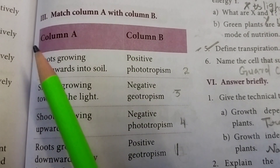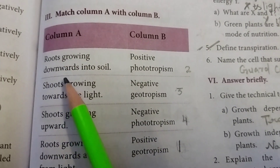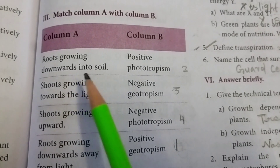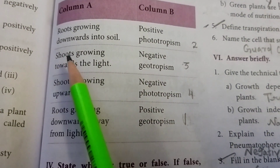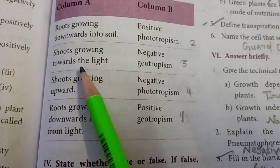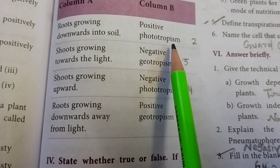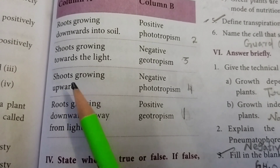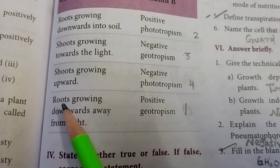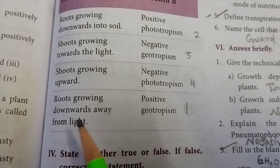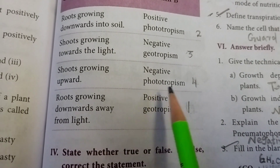Section III: match the following Column A and Column B. Roots growing downwards into soil — positive geotropism. Shoots growing towards the light — positive phototropism. Shoots growing upward — negative geotropism. Roots growing downward away from light — negative phototropism.